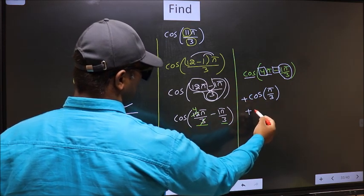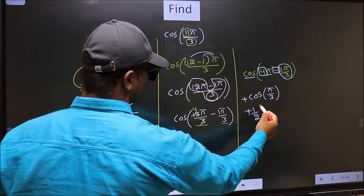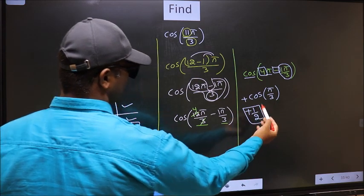So plus cos pi by 3 is 1 by 2. This is our answer.